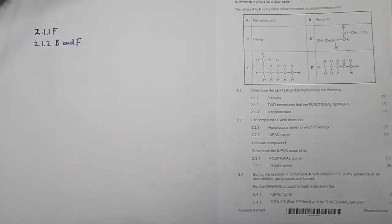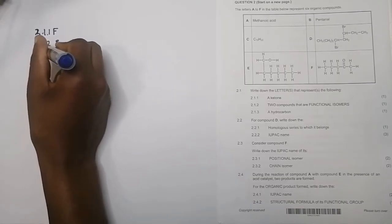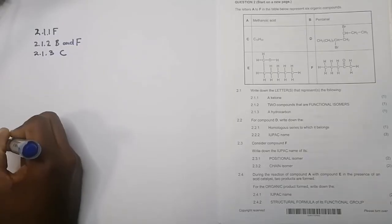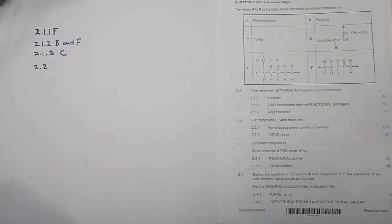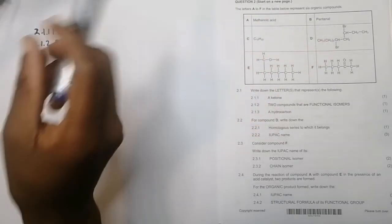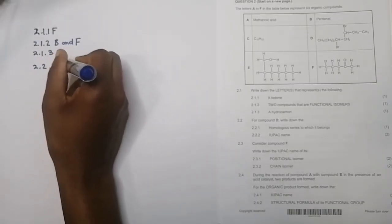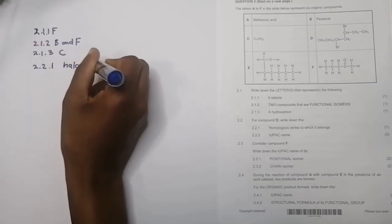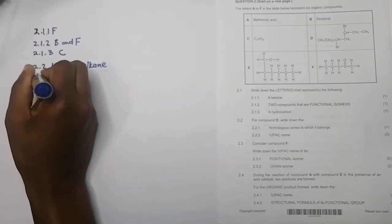For 2.1.3, they say a hydrocarbon — meaning it only has to have hydrogen and carbons. So definitely that would be compound C. And for 2.2, they say for compound D, write down the homologous series to which it belongs. Now compound D has bromines, so for 2.2.1 that belongs to haloalkanes. You can also call them alkyl halides, but haloalkanes should do.